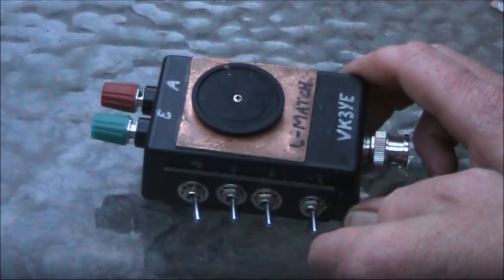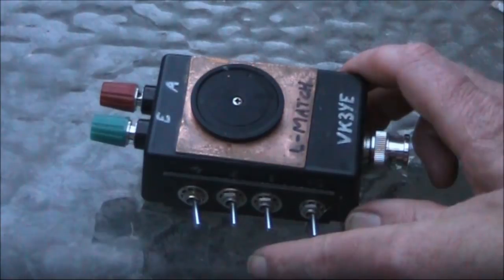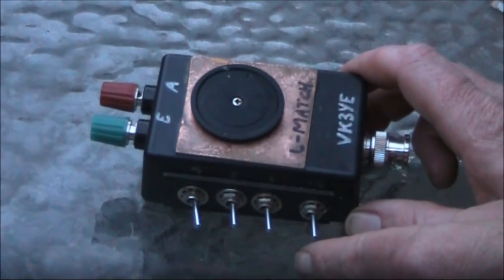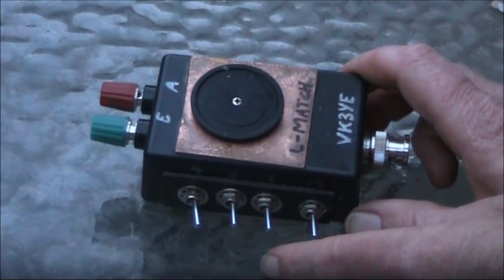The only downside is your steps are less fine. Instead of 0.5 microhenries, it's 1 microhenry. This coarser step really only affects the coupler's usability on the higher HF bands, say 21 to 28 MHz.